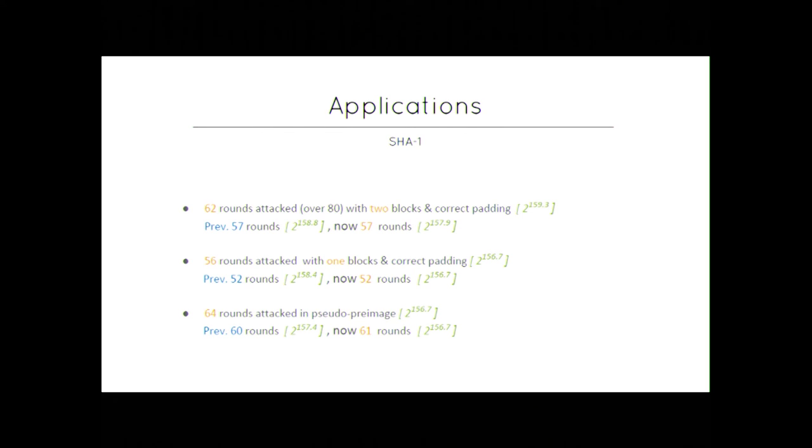And for the same amount of rounds we lower by a factor almost 4. And in pseudo pre-image, which means that you allow the attacker to choose the IV, which allows you to be more flexible in the attack, we managed to attack 64 rounds in pseudo pre-image with this complexity. And the previous result still in Rovatovich paper were 60 rounds. So overall the introduction of higher order differential allowed us to get further in the attack and to lower the complexity of the rounds previously attacked.